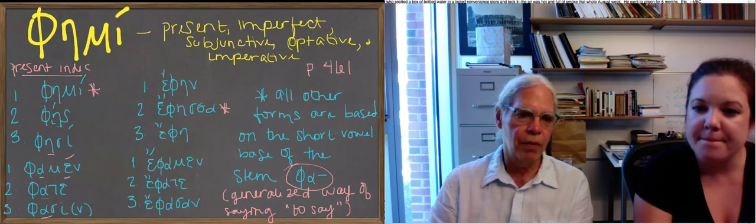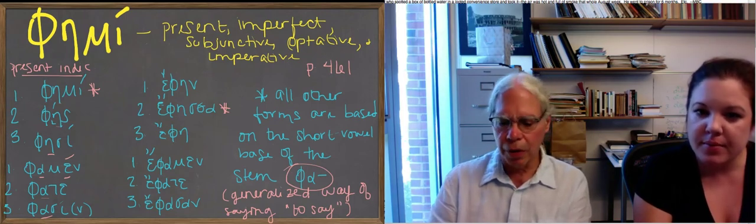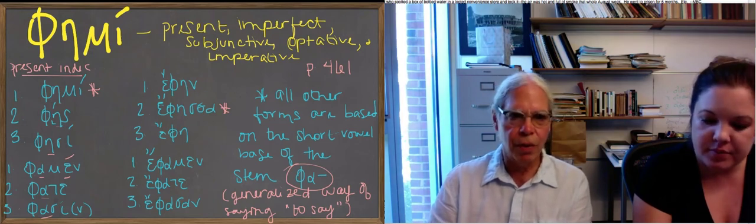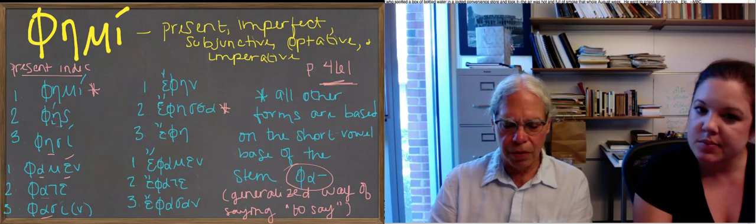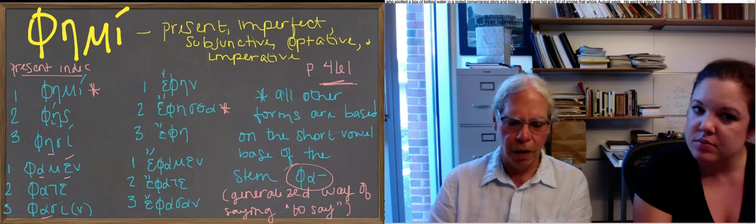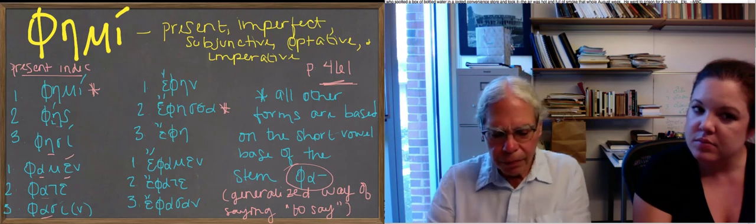The optative is going to be faien, faies, faien. If you look at these forms in the book, they're on page 461. I don't think there are any surprises in them. The same is true of the imperative forms, which are based on the fa form of the stem.